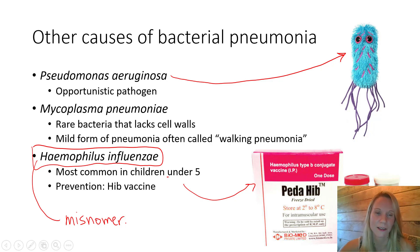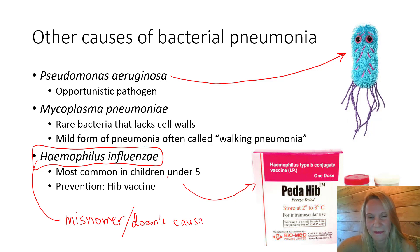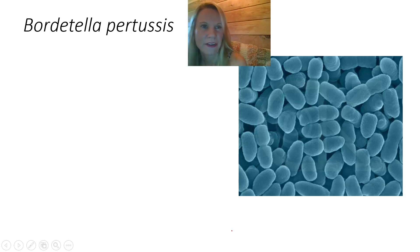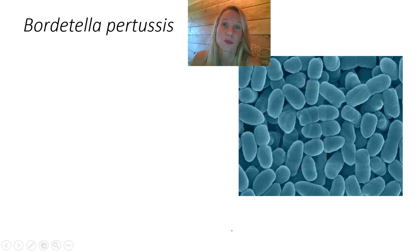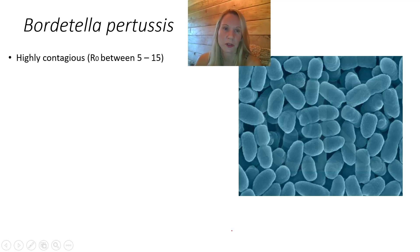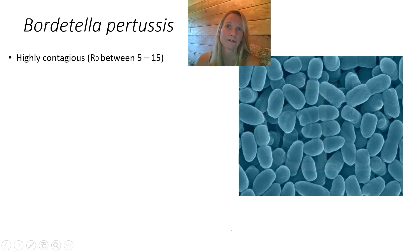Moving on: Bordetella pertussis causes whooping cough, also known as pertussis — highly contagious with an R-naught between 5 and 15. The bacteria has virulence factors including pertussis toxin, which is very damaging. It starts relatively mild, then patients develop a fever and a very characteristic cough that makes it difficult to breathe. They can die from prolonged hypoxia, brain damage, or collapsed lungs. Antibiotics work but only during the early phase, before the toxin is released. It's sometimes called the 100-day cough, lasting one to six weeks.